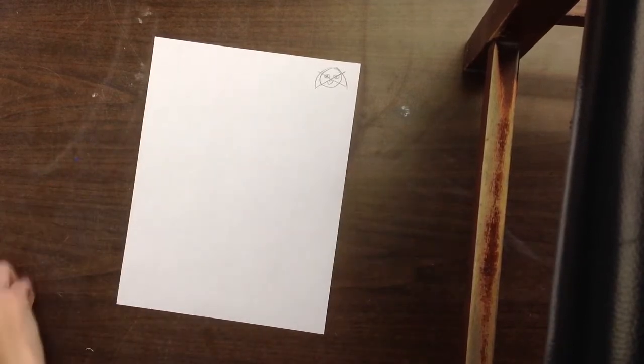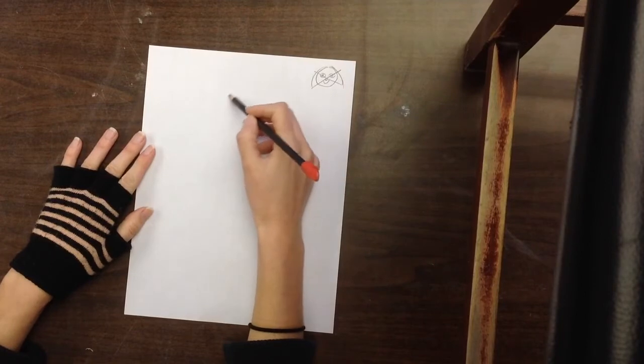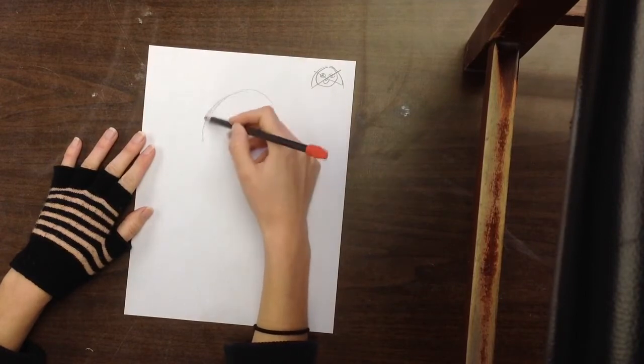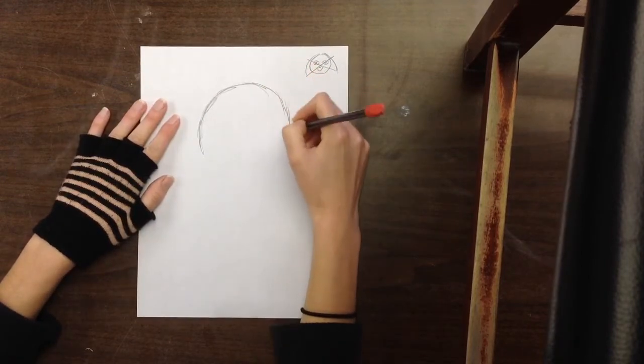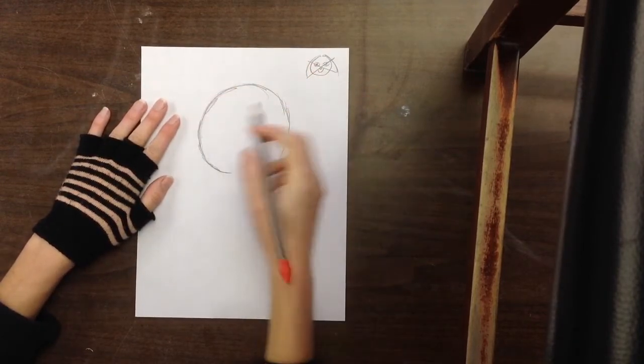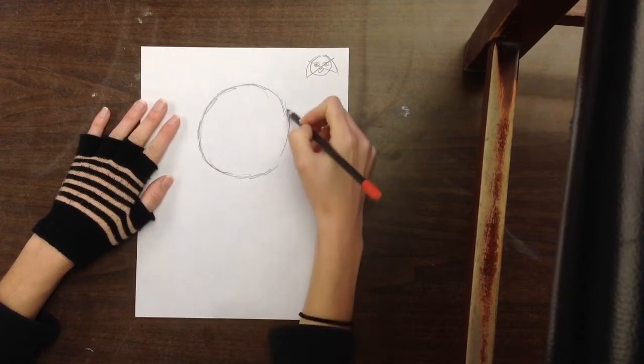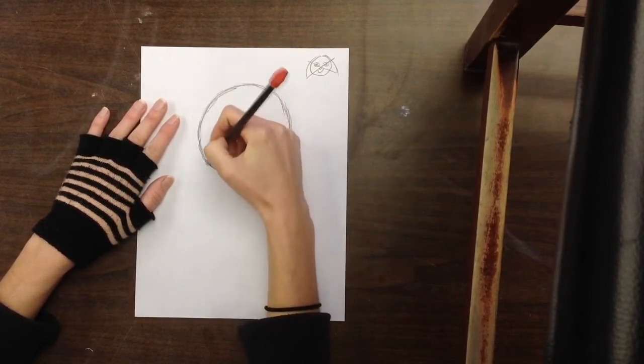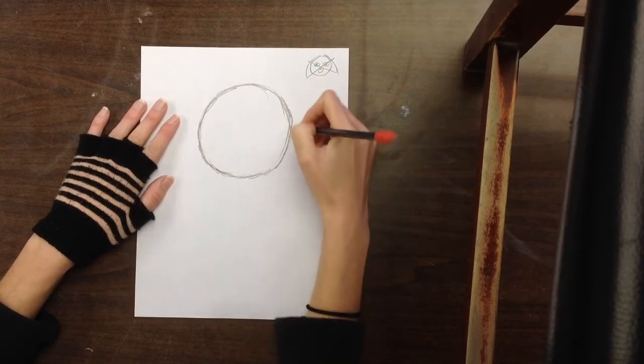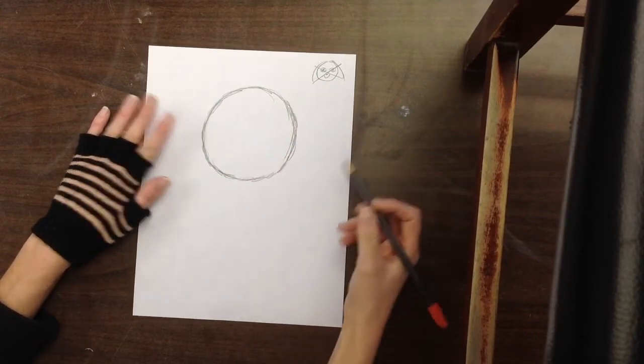So what we'll start out with is just a circle, and I like to draw nice and sketchy so that it's easier for me to erase later on.